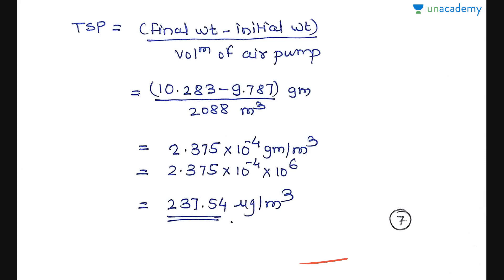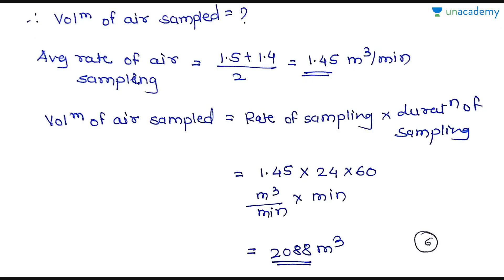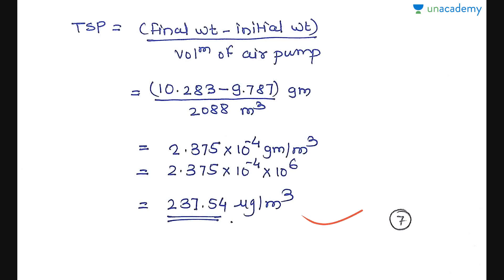This question required knowledge of particulate matter and the high volume sampler procedure. Key formulas to remember: TSP = (final weight − initial weight) / volume of air sampled; and volume of air sampled = rate of sampling × duration of sampling. Always do proper unit conversion so your answer is in the correct units as asked. I hope this lesson was useful. Please rate, review and recommend my courses and lessons, share this video, and subscribe to our YouTube channel. Thank you.